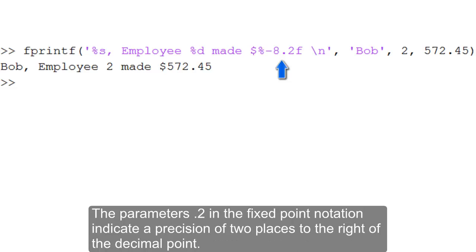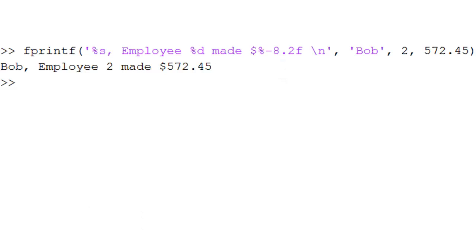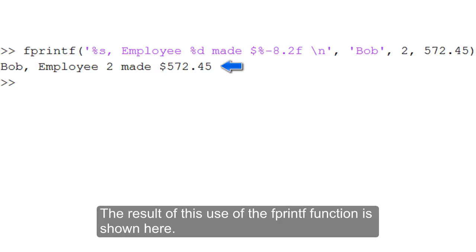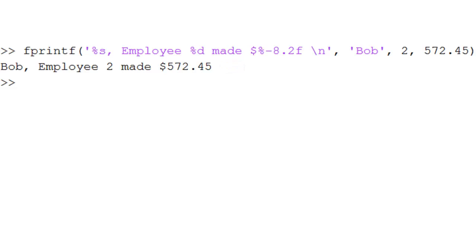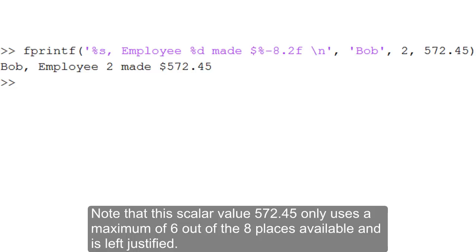The parameters 0.2 in the fixed point notation indicate a precision of 2 places to the right of the decimal point. The result of this use of the fprintf function is shown here. Note that the scalar value 572.45 only uses a maximum of 6 out of the 8 places available and is left justified.